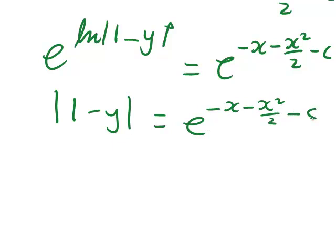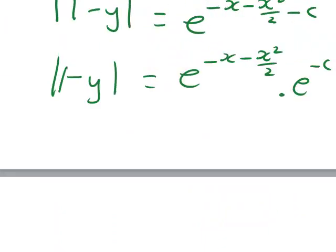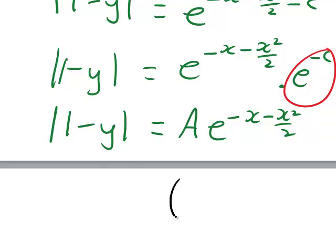We can simplify the right-hand side to be e^(−x − x²/2) multiplied by e^(−c). If you look at e^(−c), that in itself is just a constant raised to a constant, so it can be replaced by another constant A. We get |1 minus y| equals A·e^(−x − x²/2), and it's worth noting that A is e^(−c).